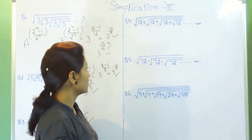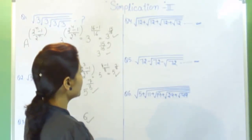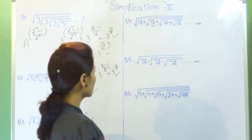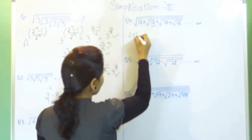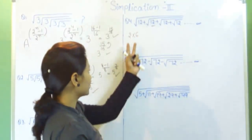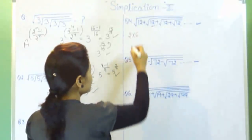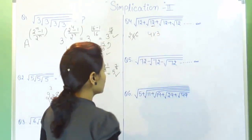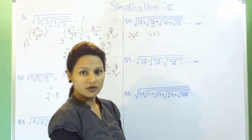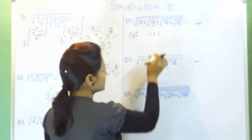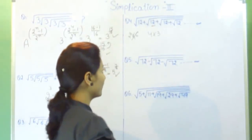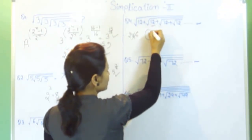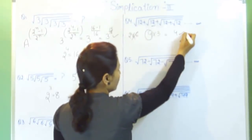Question number 4: to solve this question first we have to factor the number and the difference between the factors should always be 1. If we do 2 into 6, this is a factor of 12 but the difference is not 1, so this is wrong. If we do 4 into 3, the difference is 1, so this is the right factor. Whenever we have the sign of addition, our answer should be the largest number, that is 4.